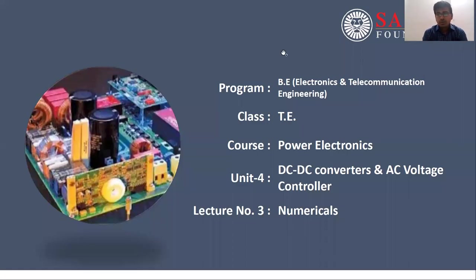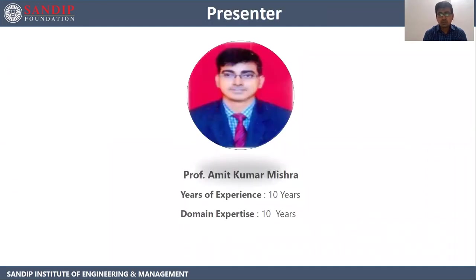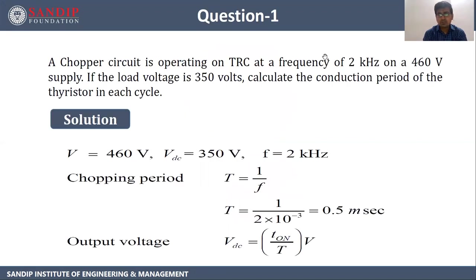Hello everyone. Today we are going to see numericals on DC to DC converter, that is unit number 4. In our previous lectures we have seen about what is a chopper, what are the types of chopper, and each chopper in detail. In this lecture we will see numericals on step-up chopper and AC voltage controller. Myself Professor Amit Kumar Mishra. I am having total 10 years of teaching experience and my domain expertise is of 10 years. So let's start with question 1.